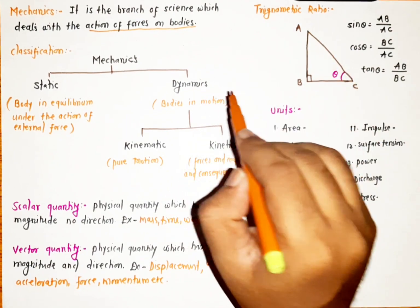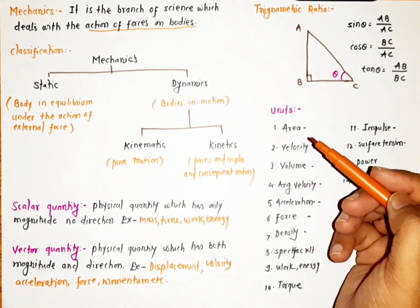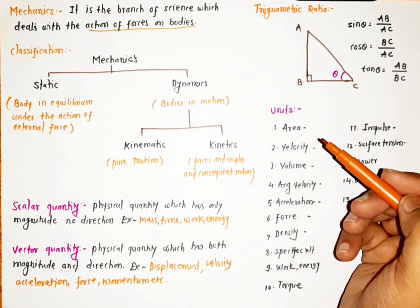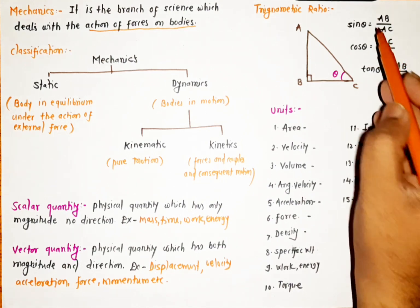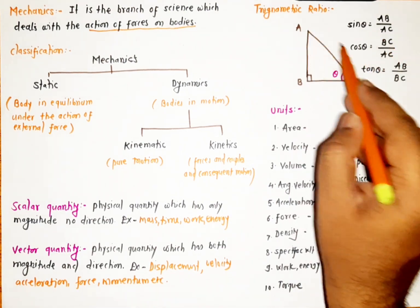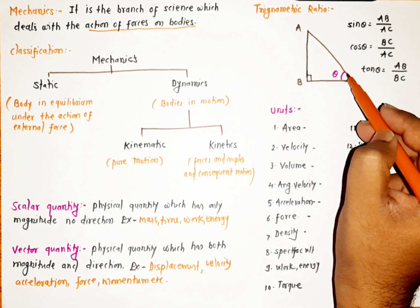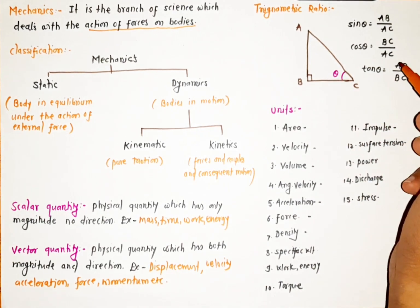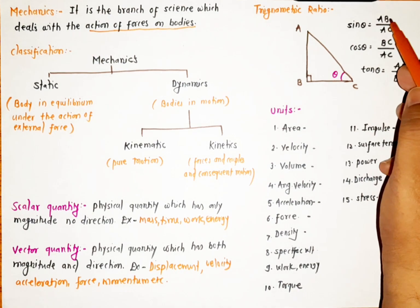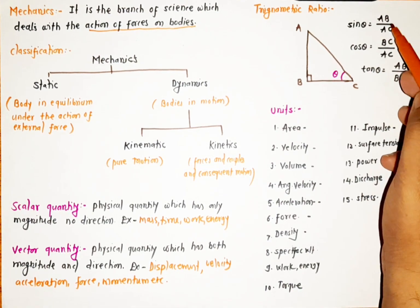Next is trigonometric ratio. This is one of the basic and important concepts for solving force-related problems in engineering mechanics or applied mechanics. For sin theta, whenever there is a triangle ABC we want to find out sin theta, cos theta, and tan theta. With the help of these, we can find the sides of triangles.